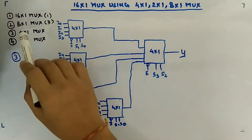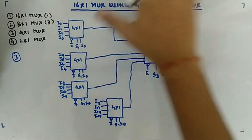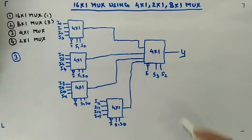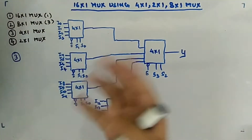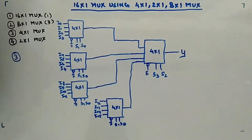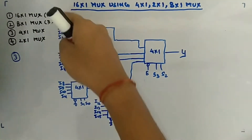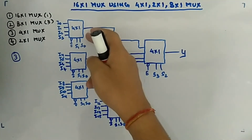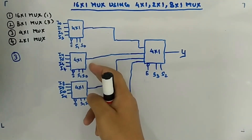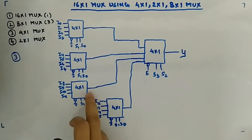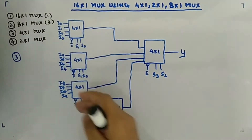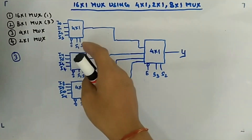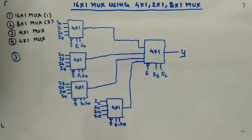The third case uses 4:1 MUXes to make a 16:1 MUX. We want 16 and have 4:1, so 16 divided by 4 gives 4 - meaning four 4:1 MUXes are needed in the first layer. All four have the same select lines and enables. I0-I3 go to the first 4:1 MUX, I4-I7 to the second, I8-I11 to the third, and I12-I15 to the fourth. Enables are set to ground, and select lines S1, S0 are given to all four.